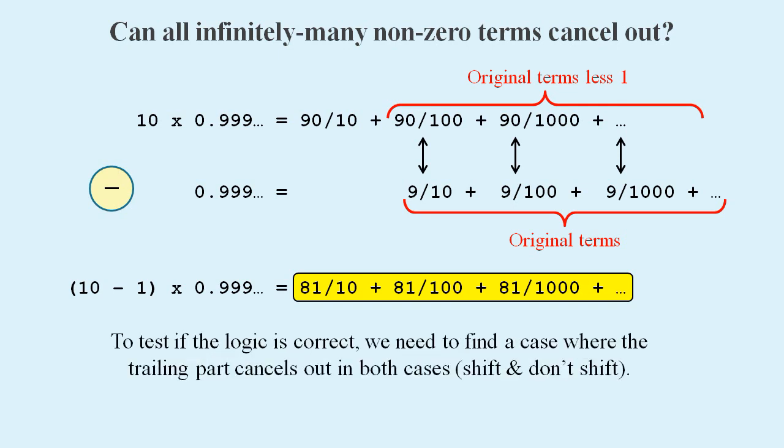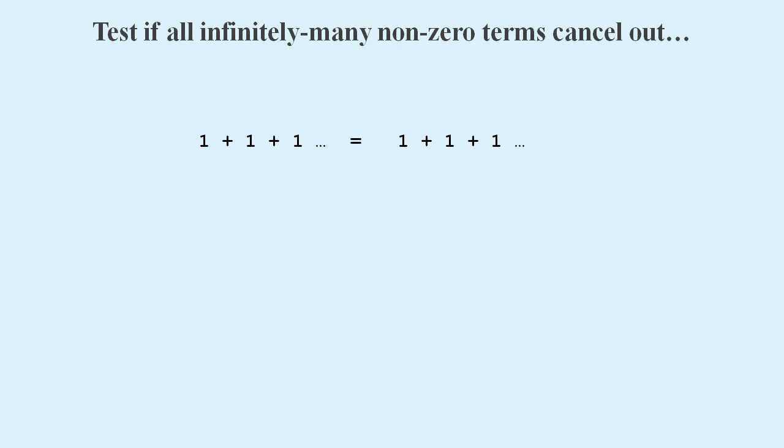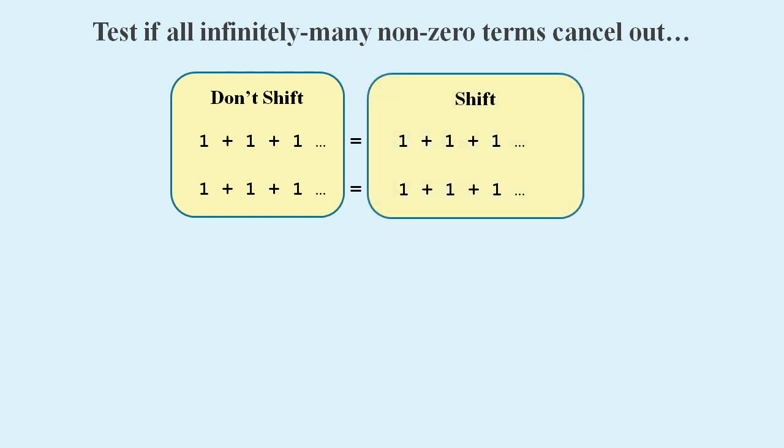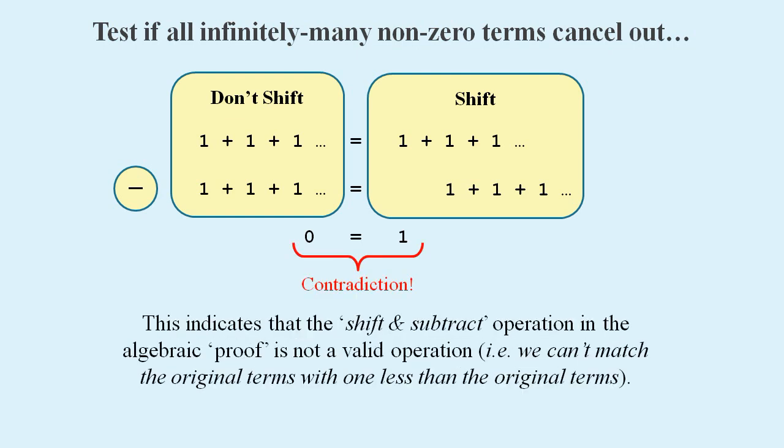But can we really do this? We could test if this logic is correct if we could find a case where the trailing part cancels out in both scenarios, when we shift the terms and when we don't shift the terms. And this series fits the bill. On the left hand side we won't shift the terms, and on the right hand side we will. We will shift by one place as in the proof. We do the subtractions, and we end up with 0 equals 1, which is a clear contradiction. So this tells us that we can't match the original terms with 1 less than the original terms. And so the original proof is flawed, and it doesn't prove that 0.9 recurring equals 1.